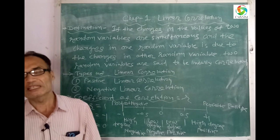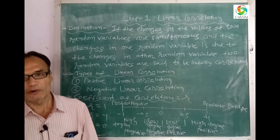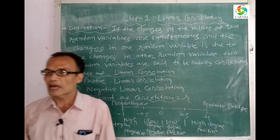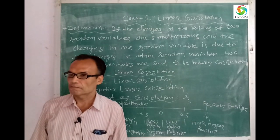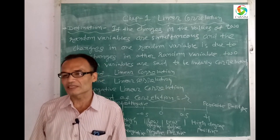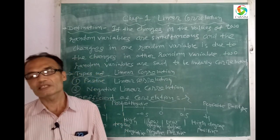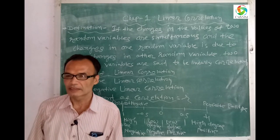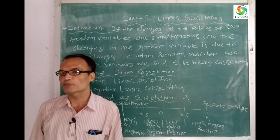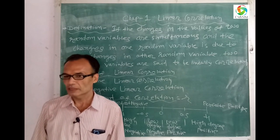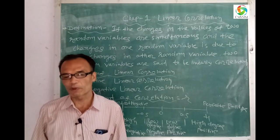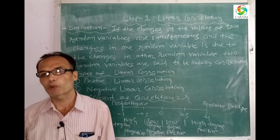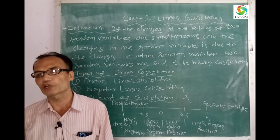From today we will start our subject statistics. There are five chapters in statistics. First is linear correlation. Second is linear regression. Third is probability. Fourth is probability distribution one. And fifth is probability distribution two.